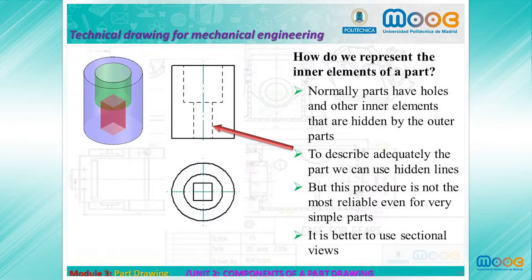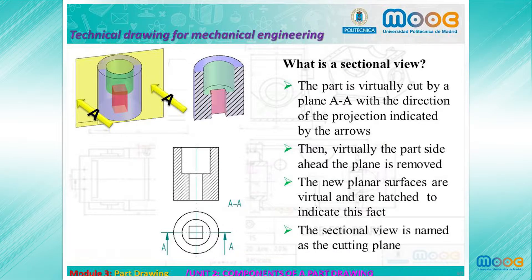Parts have holes and other inner elements that are hidden by the outer elements. To describe the part adequately, we can use hidden lines, but this procedure is not the most reliable, even for simpler parts, because the visibility of this kind of lines in complex parts is very poor. Better is to use sectional views.